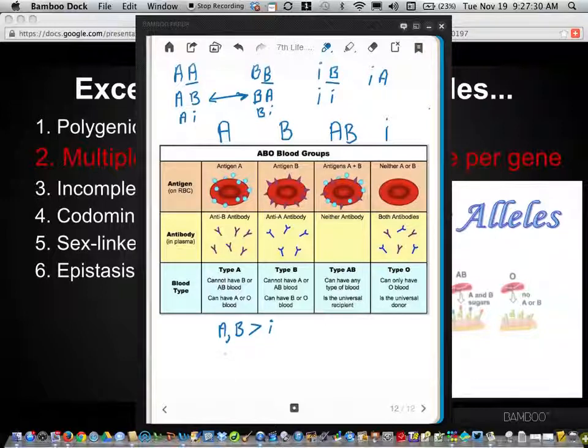You also have to realize that A is something called codominant to B. That is, A equals B, and it's codominant. What that means is, if the A allele is there and the B allele is there, it'll be both A and B. One is not dominant over the other.